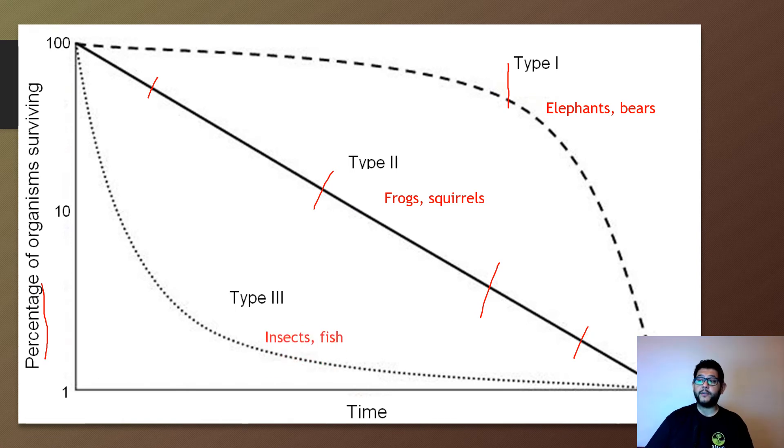And then your final group is Type III. Those are going to be more your R-selected species. These are going to be like your insects or fish. So those are going to be the types that have a lot of offspring early, but they don't make it. Many of them may die.